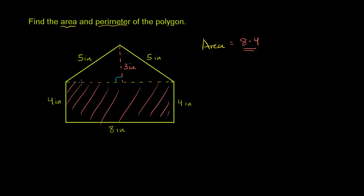And then we have this triangular part up here. So we have this area up here. And for a triangle, the area is base times height times 1 half.